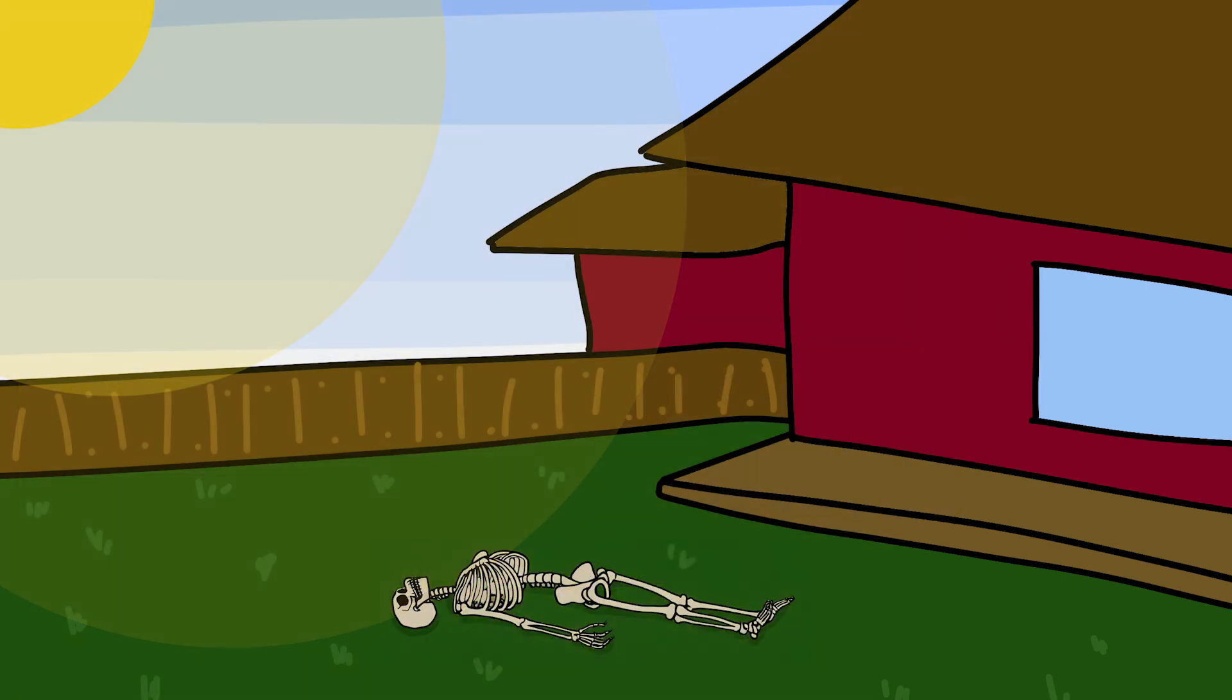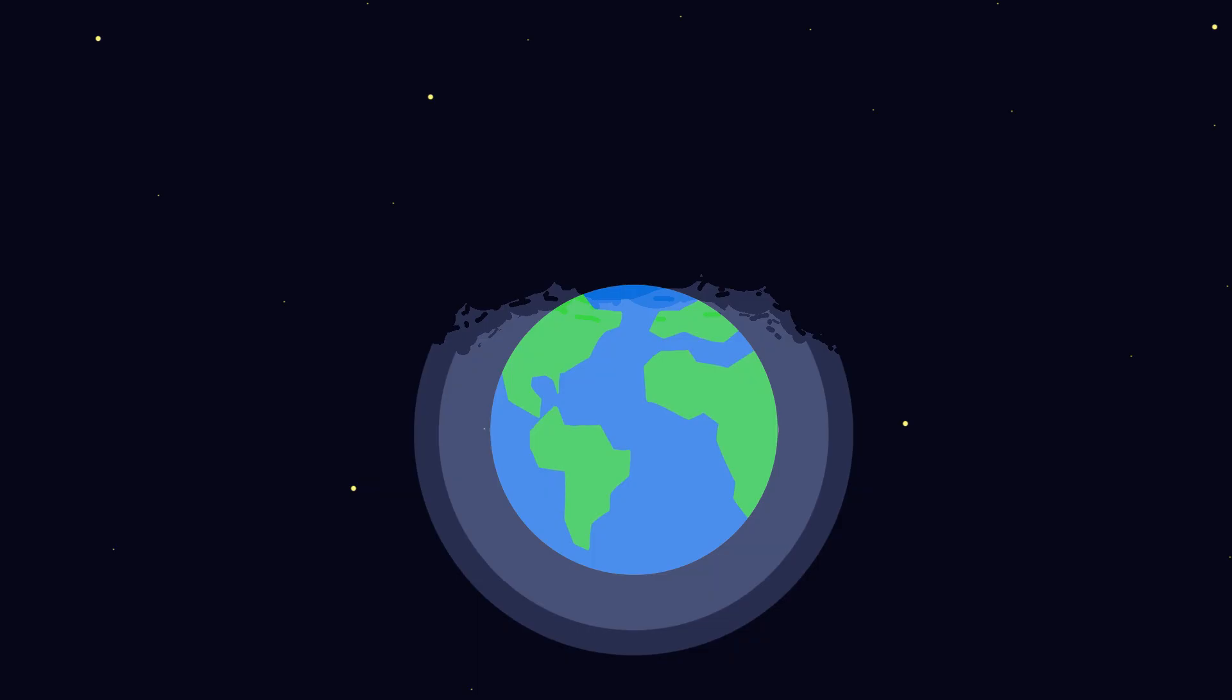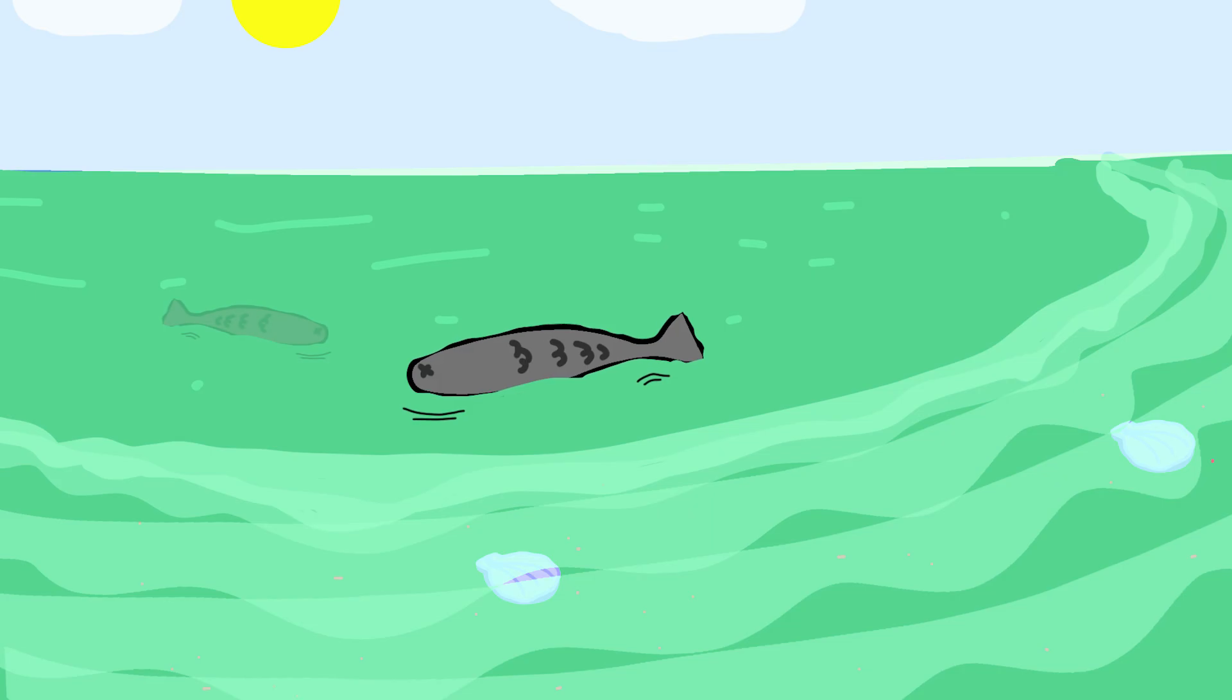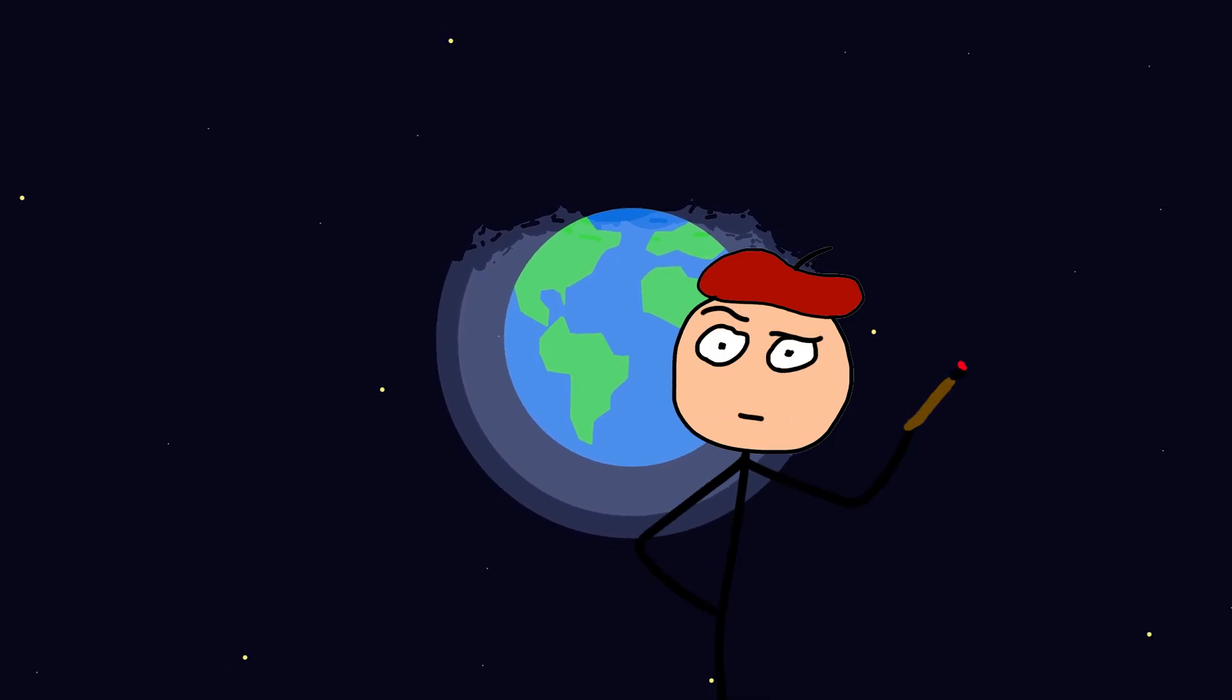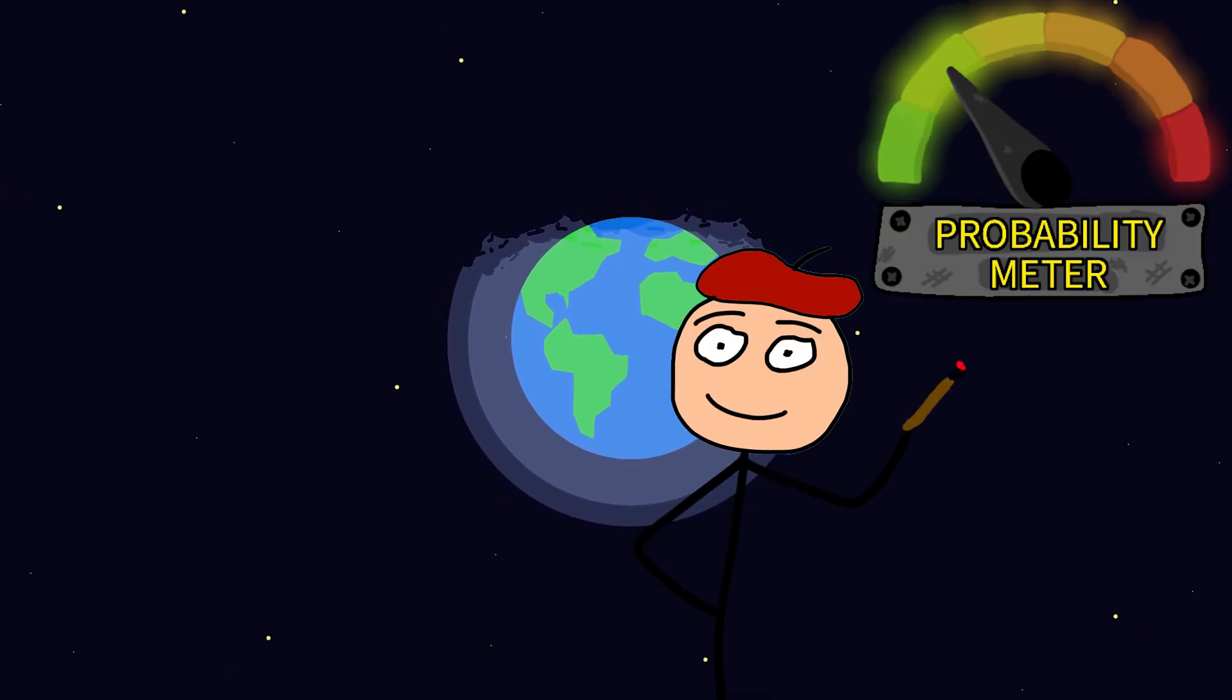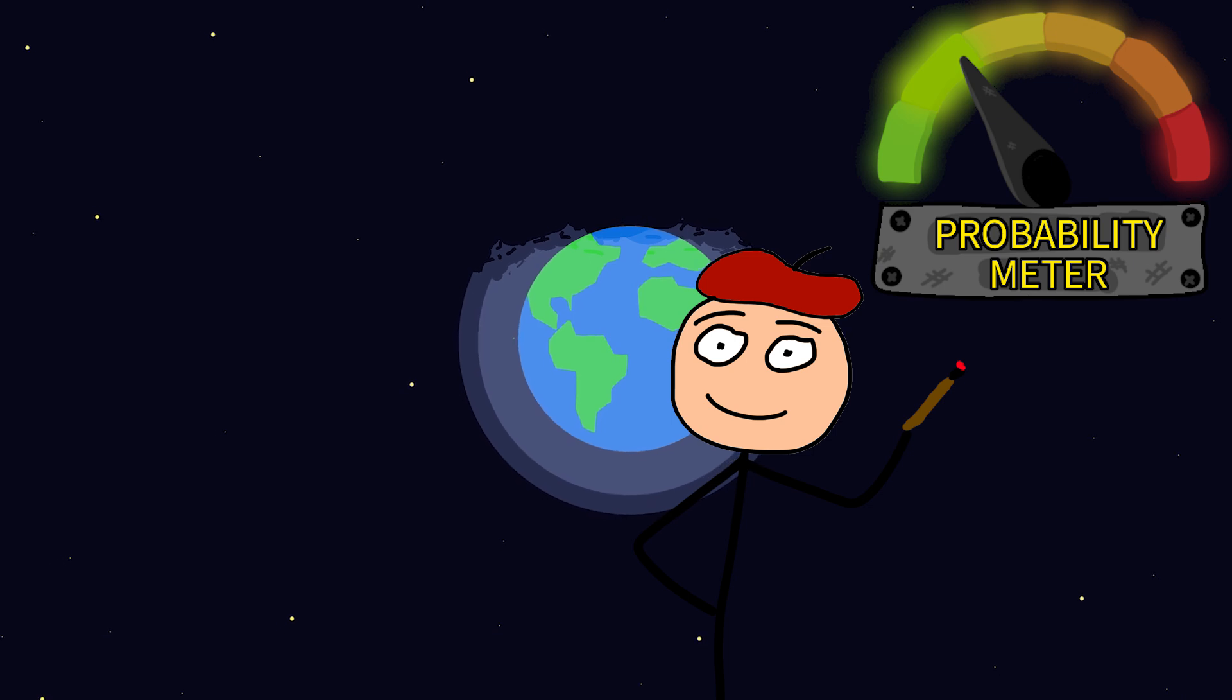After a few years, the supernova's radiation finally fades, but the damage doesn't. Half the ozone layer is gone, ecosystems are wrecked, and humanity's numbers have collapsed. You probably won't survive this scenario, but don't worry. There is no known star within 100 light years ready to explode anytime soon. At least not for a few hundred million years.